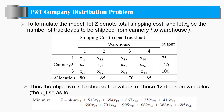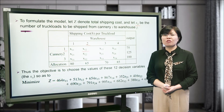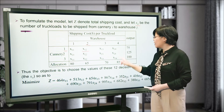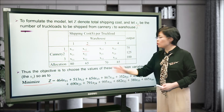To formulate the model, we let Z denote the total shipment cost, and let Xij be the number of truckloads to be shipped from cannery i to warehouse j. For example, X12 means the number of truckloads from cannery one to warehouse two. The objective is to choose the values of these decision variables so as to minimize the total cost.